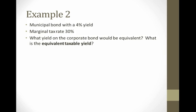Example 2. Let's consider now a municipal bond. Suppose we're given the muni yield, we have a different marginal tax rate. Now I want to solve for a corporate bond yield that would be equivalent. We actually call this the equivalent taxable yield.